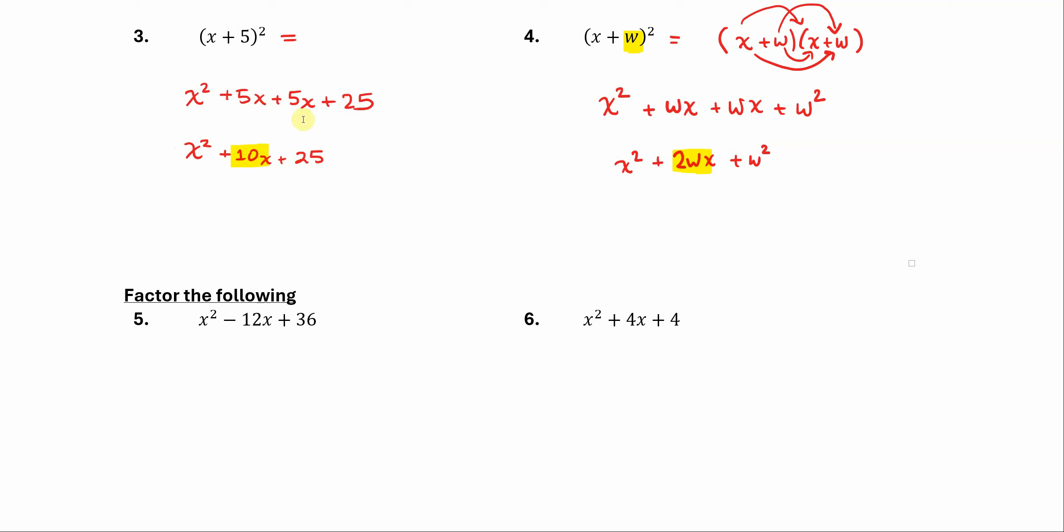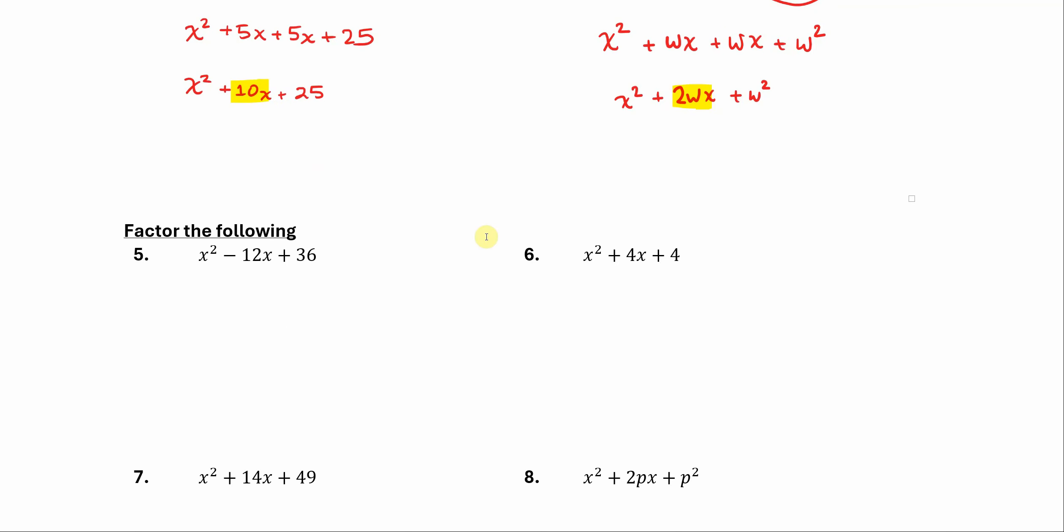And then plus that number squared. All right, so now we're going to go in the reverse direction. Let's factor the following. Okay, so we'll do our little trick as before. We make the big X, we put the 36 up here and the negative 12 down here, and so we're looking for two numbers that multiply to 36.